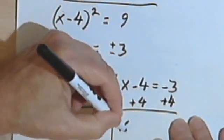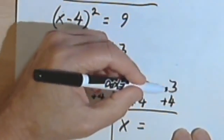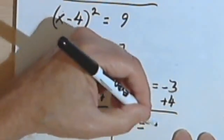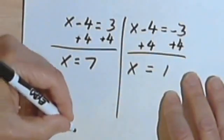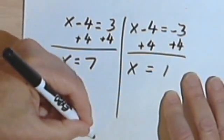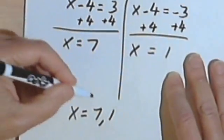I'm going to get x equals negative 3 plus 4. So the answer is positive, and it's going to be a positive 1. So I can write my answers as x equals 7 comma 1.